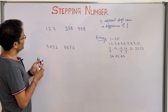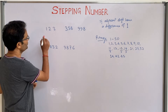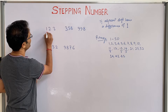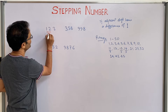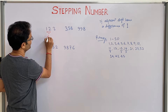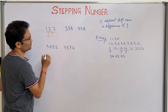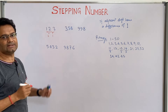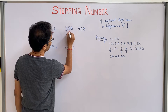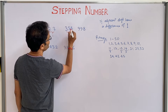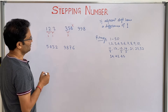If you see the number 123, the difference between 1 and 2 is 1, and the difference between 2 and 3 is also 1. So 123 is a stepping number. But if you see 3 and 5, the difference is 2, so that is not a stepping number.